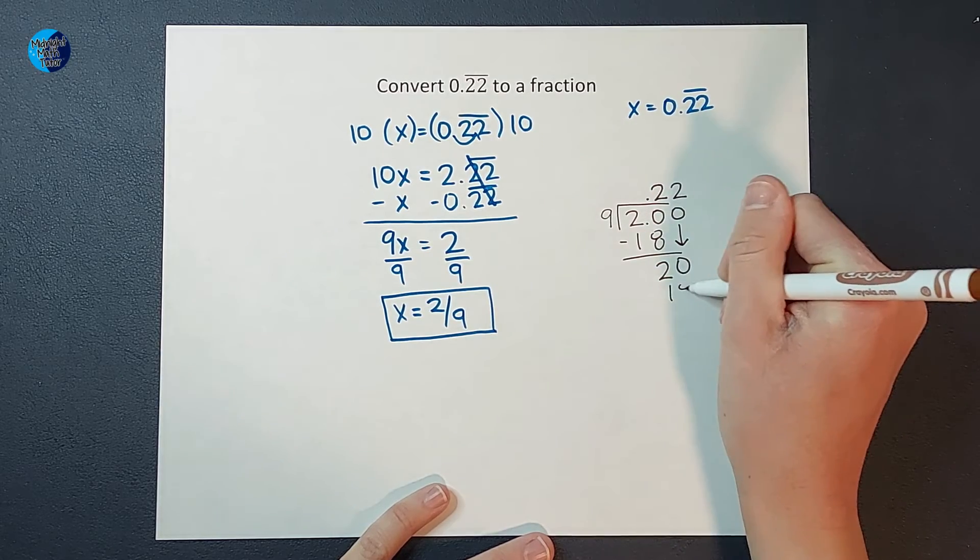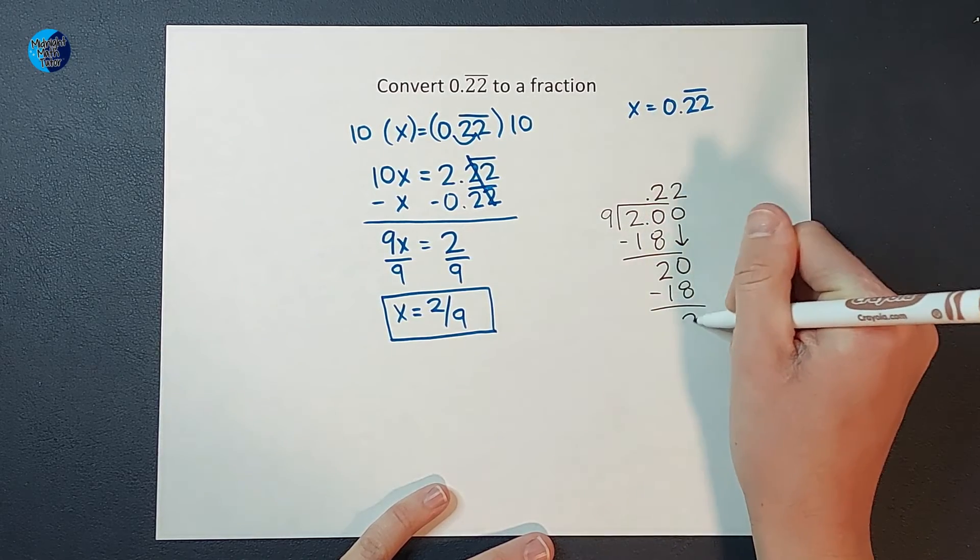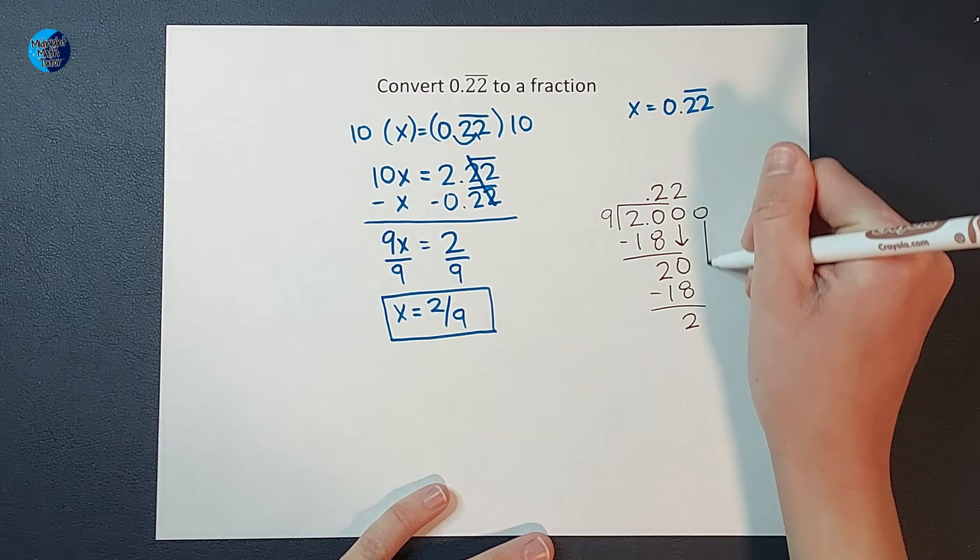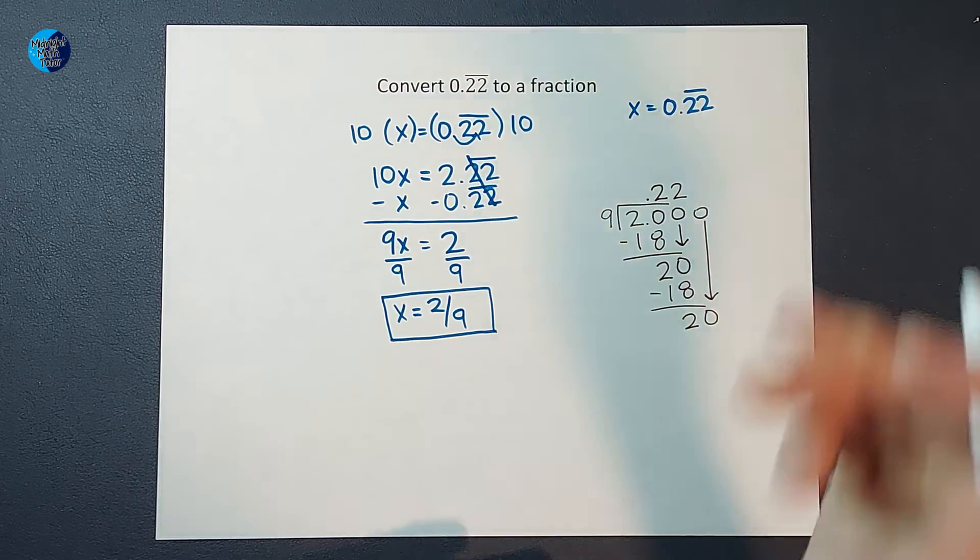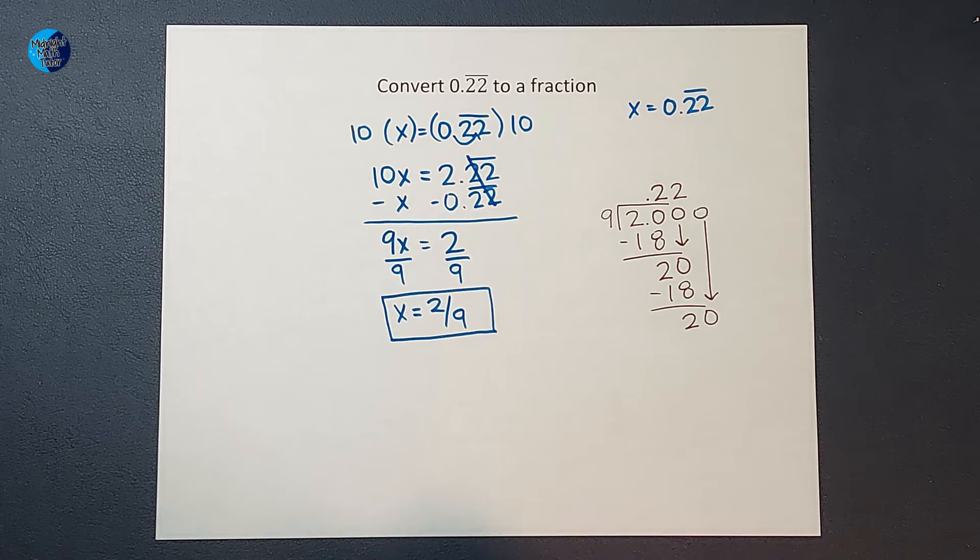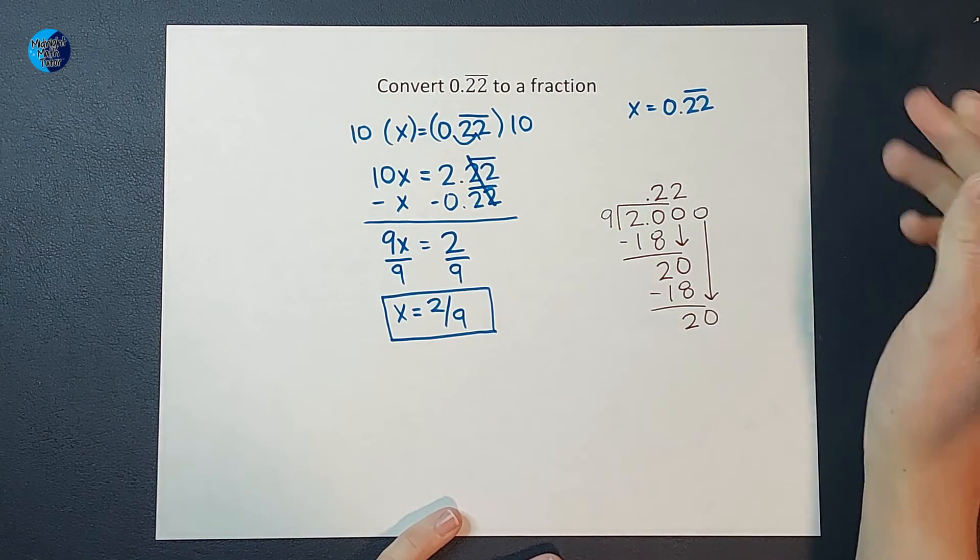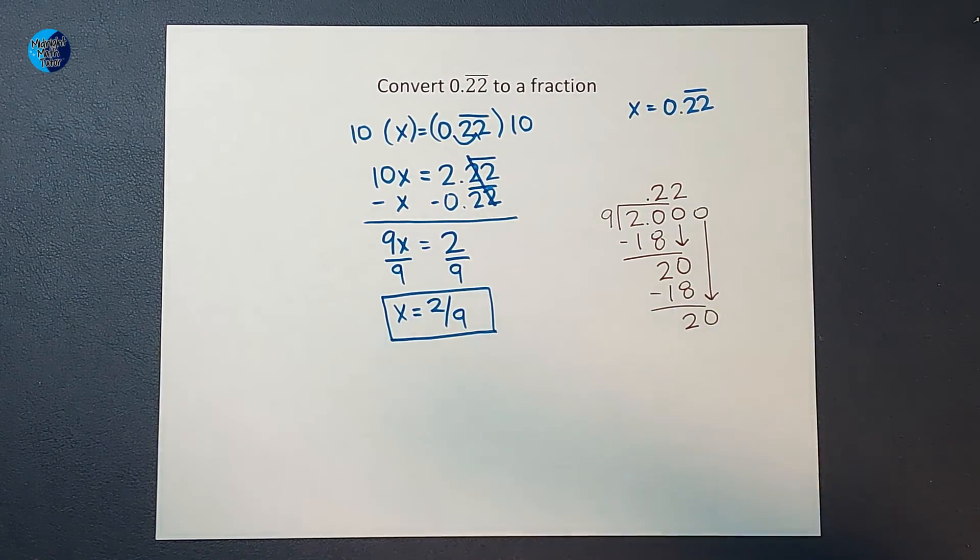2 times 9 is 18. I subtract and get 2. And you're probably like, oh, I see what's happening here. I'm going to keep doing that for a long time. I could literally do it forever, right? I'm going to keep getting 2s forever. So that is why 2 ninths is equal to 0.2 repeating.